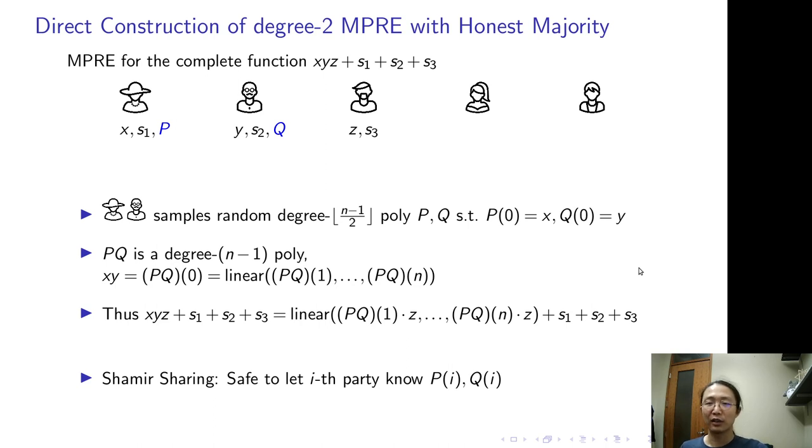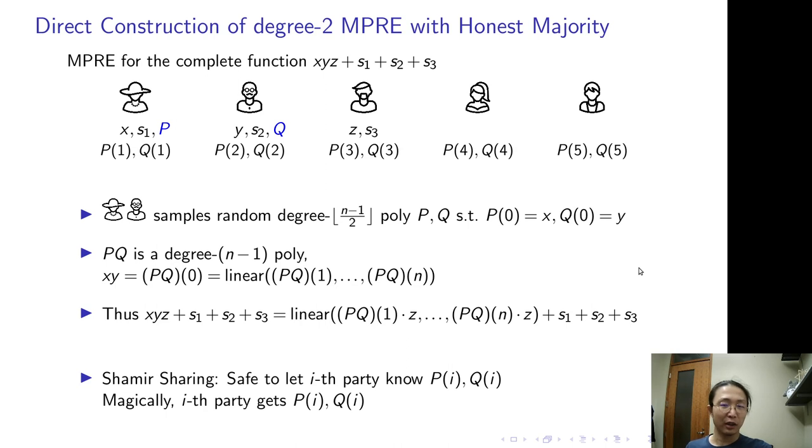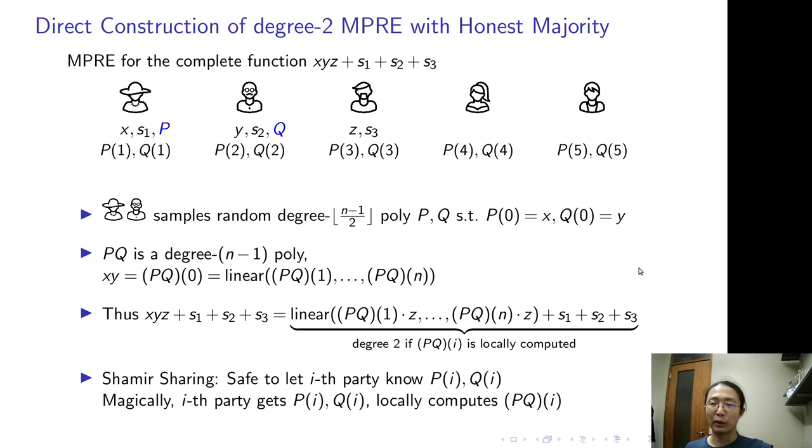Shamir also told us that when only less than half of the parties may be corrupted, it is safe to let the i-th party know P(i)Q(i). So let them learn. Imagine that magically, the i-th party gets P(i)Q(i). Now, each party can locally compute P(i) times Q(i). After the local computation, the target function becomes a degree 2 polynomial on local information. Since that, we are done.